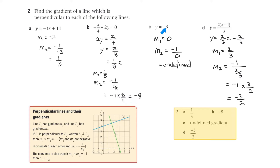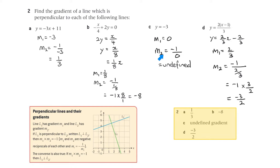For y equals minus 3, that's a horizontal line with a slope of 0. A line perpendicular to a horizontal line is a vertical line. Using m2 equals minus 1 on m1 gives minus 1 divided by 0, which is undefined — confirming a vertical line.